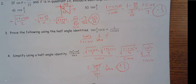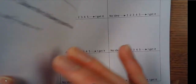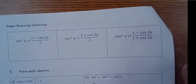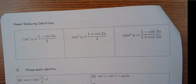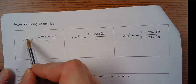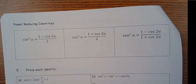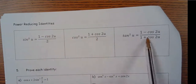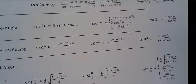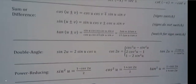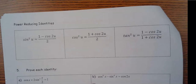On the back side: these are called power reducing identities. If you have something squared and you need to get rid of the square and reduce it down to a first power, these are the ones to use. You'll have your formula sheet, so you don't have to memorize them — you just have to know how to use them. Look at them, look at the patterns.